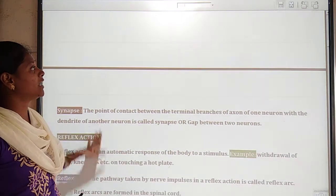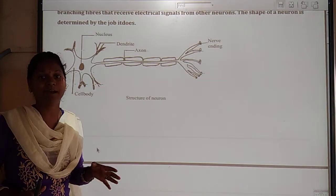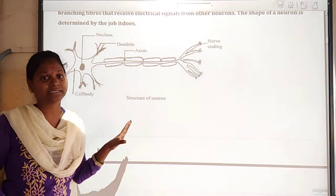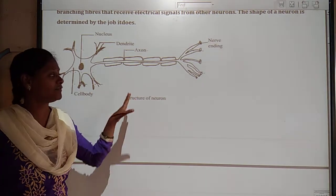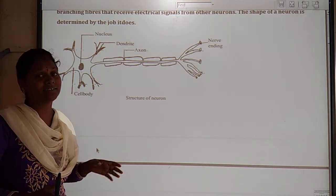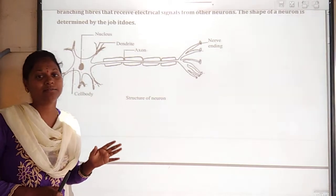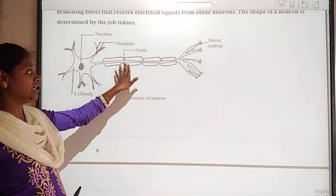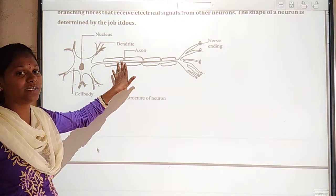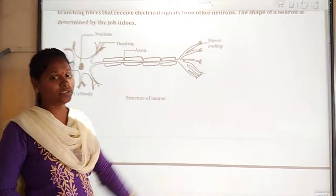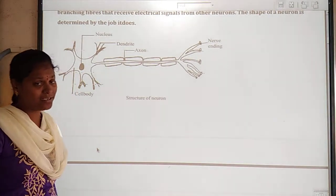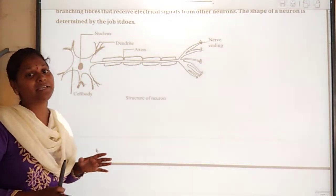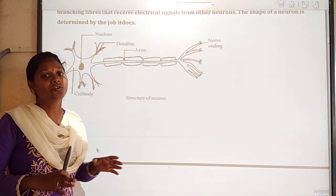As I already told you, the structure of the neuron is connected by one to another. Electrical impulses pass through with the help of the axon. So electrical impulses are nothing but messages. With the help of the axon, electrical impulses can be passed through, and when they reach the nerve ending, some chemicals are released. At the tip of the nerve ending, the name of the chemical is nothing but neurotransmitters.